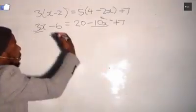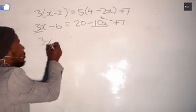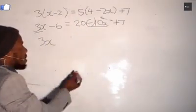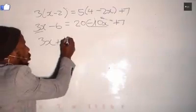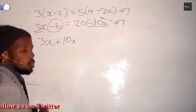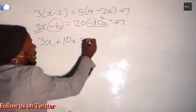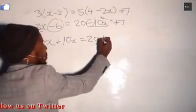So we take negative 10x and move it to the left hand side where there is 3x. It goes on that side and becomes a positive 10x, it changes the sign. The same thing with the number, it goes and joins the other numbers on the right hand side of the equal sign. It becomes positive 6 because there is 20 plus 7.